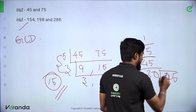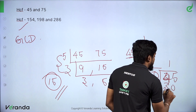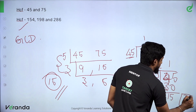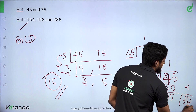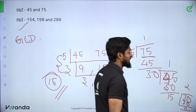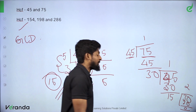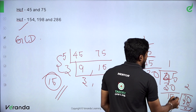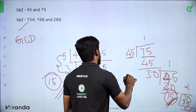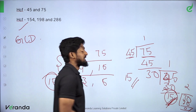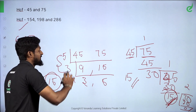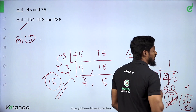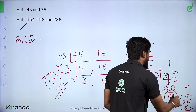Now we divide 45 by 30. 30 goes into 45 once, balance is 15. Then 30 divided by 15: 15 goes 2 times into 30, remainder is 0. When you divide a number and the remainder is 0, that number is the HCF. So for this sum, 15 is the HCF.